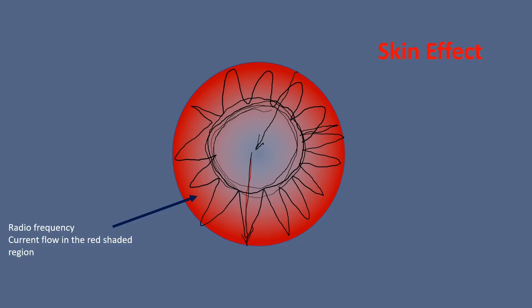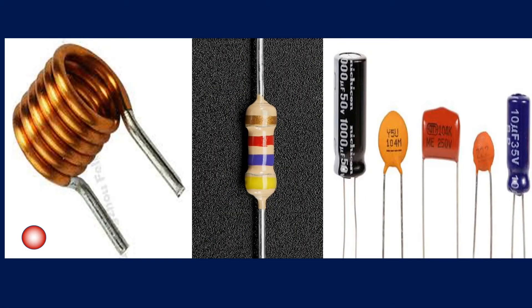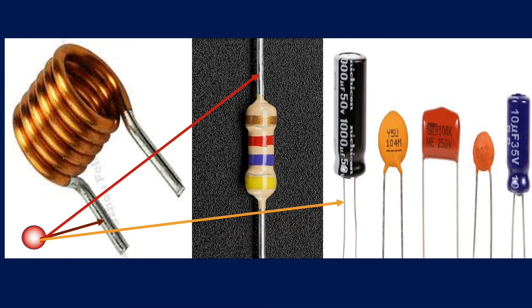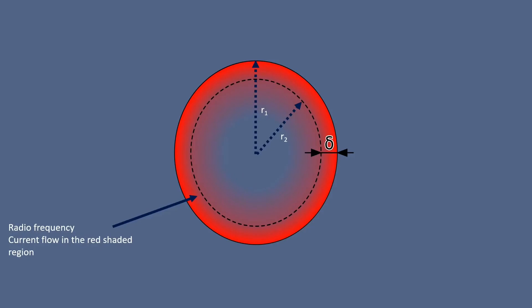Skin effect happens for all leads of any components, such as inductor leads, resistor leads, and capacitor leads. Now I'm going to talk about the skin depth of a conductor. What is the skin depth? We have already seen that the red shaded zone is the current density zone of the frequency.